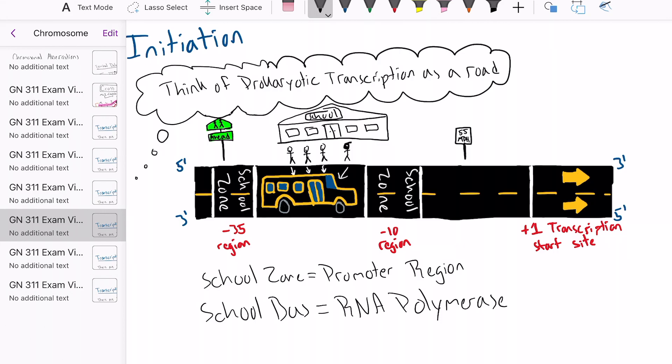Once the driver loads on the bus as a sigma factor, it will create a complete RNA polymerase unit. This is now a holo enzyme.